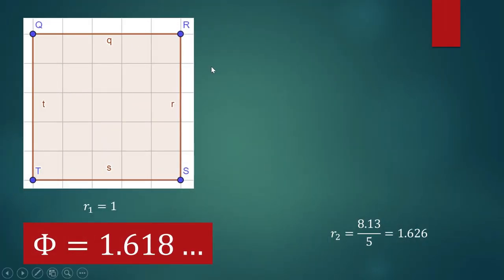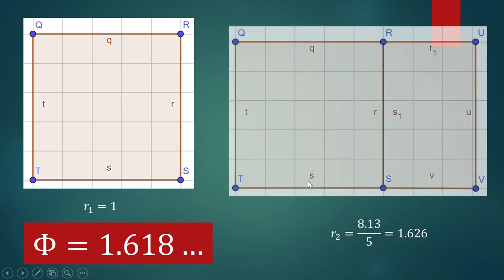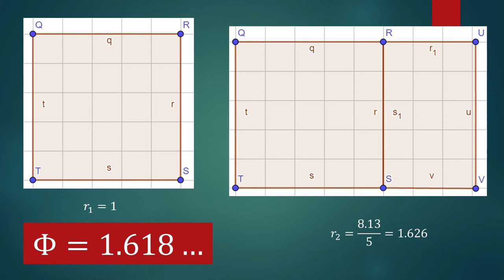Now let's say I have a square whose side is 5. I will append a rectangle to the square — a rectangle whose shorter side is 3.13 and whose longer side is 5. The resulting rectangle has a ratio of the longer side to the shorter side of 8.13 over 5, which is 1.626. This is close to the golden ratio, 1.618.